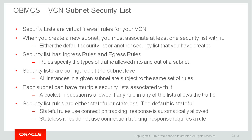Now we want to talk about security lists. You'll notice that each subnet had a default security list. Security lists are virtual firewall rules for your VCN. When you create a new subnet, you must associate at least one security list with it — either the VCN's default security list or another one you've created. Security lists have ingress rules and egress rules. Ingress rules specify types of traffic allowed into a subnet; egress rules specify types allowed out. Security lists are configured at the subnet level but enforced at the instance level, so all instances within a given subnet are subject to the same set of security rules. A packet is allowed if any rule in any of the associated lists allows the traffic.